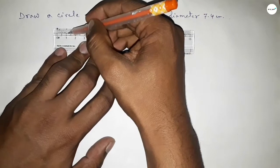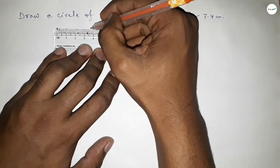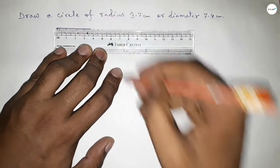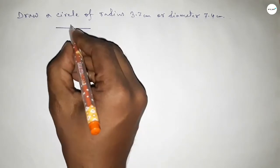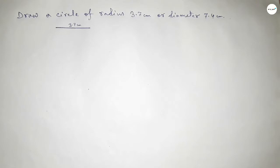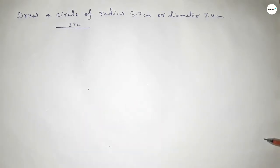This is starting 0, 1, 2, 3, and this is 3.5, 6, 7. We know that radius of a circle is equal to half of diameter. So this is 3.7 centimeter length. Now taking here a point.